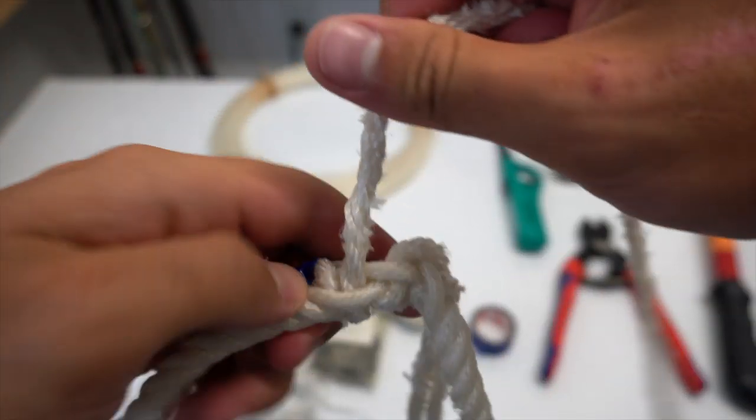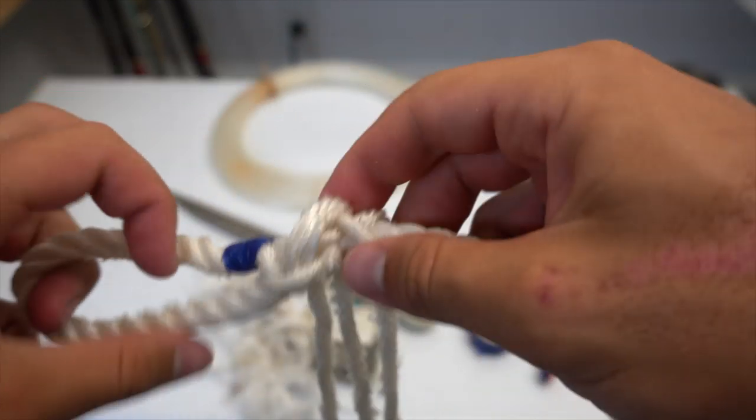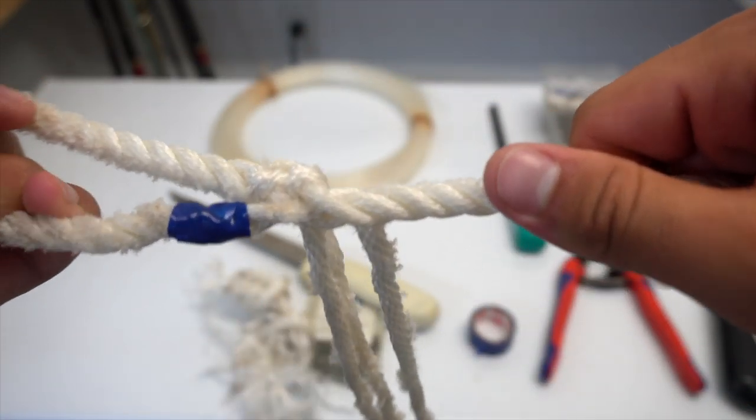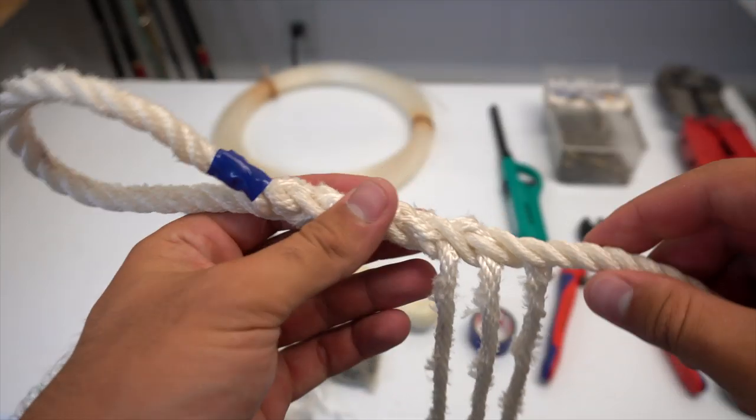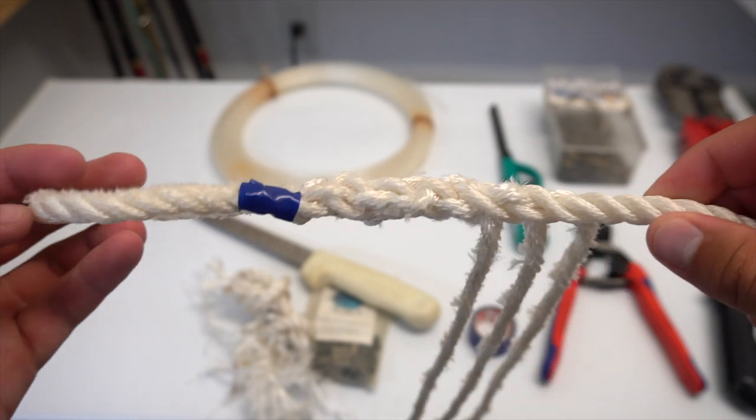You want to go ahead and repeat this process of going over the next strand and then under the one that's behind it three or four more times. You want to make sure you have at least four solid braids on each strand to make sure you have a solid connection.